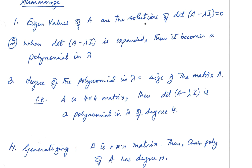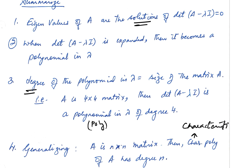To summarize: the eigenvalues of A are the solutions of det(A minus lambda I) equals 0. When you expand the determinant, it becomes a polynomial in lambda — the characteristic polynomial. The degree of this polynomial always equals the size of the matrix A. So for an n by n matrix, the characteristic polynomial has degree n.